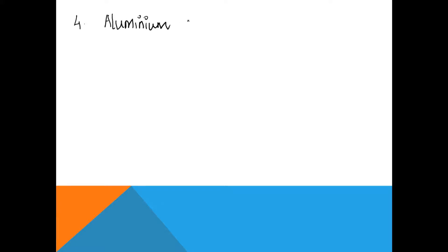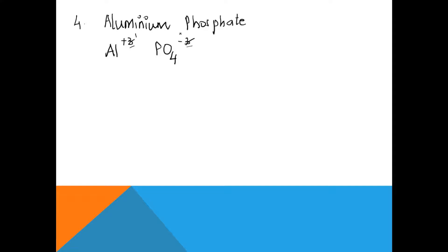Now we slowly move to slightly more difficult ones. If I say aluminium phosphate — these are very important basics for chemistry. Aluminium is Al³⁺ and phosphate is PO₄³⁻. Now check: this is plus three and minus three. Since these valencies can be cancelled, we cancel them — three ones are three and three ones are three, so they cancel. What is left is one and one, so we simply write AlPO₄.